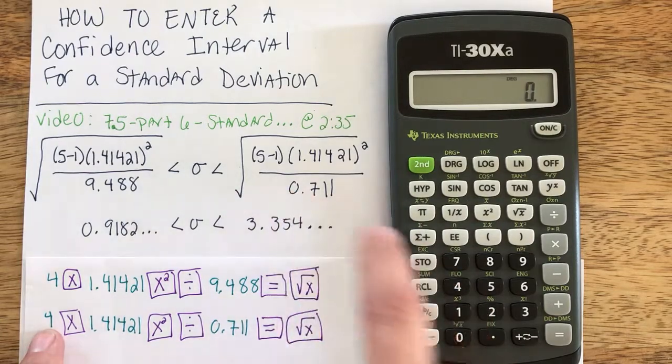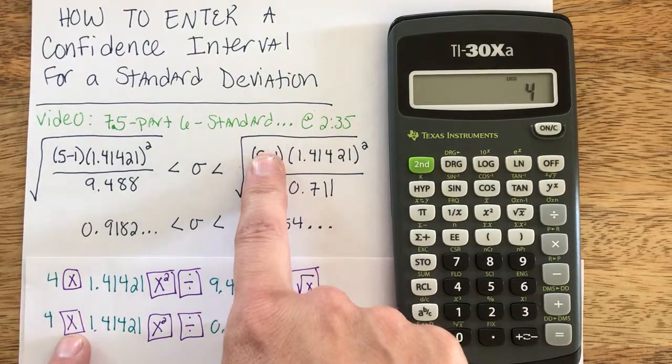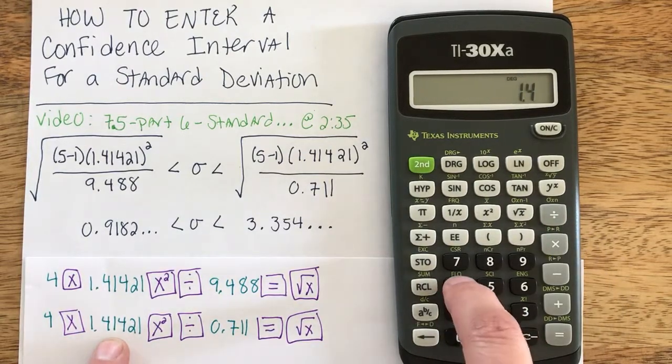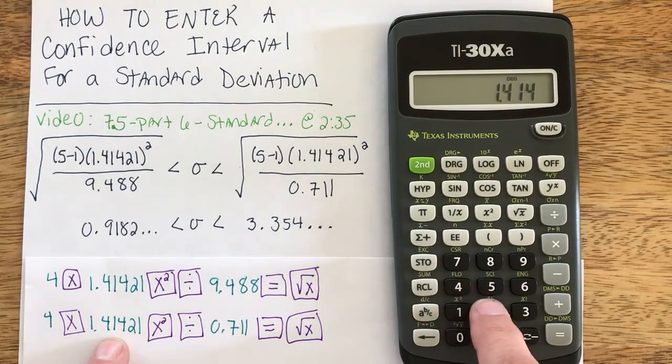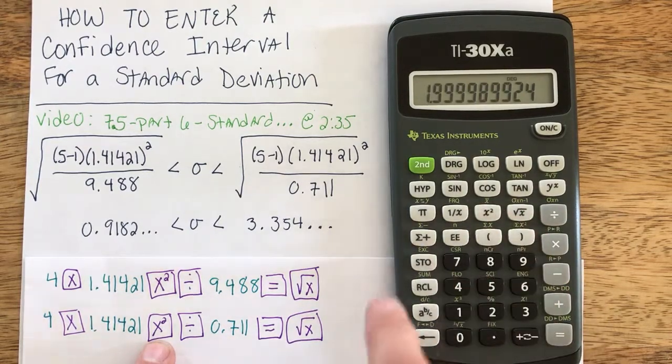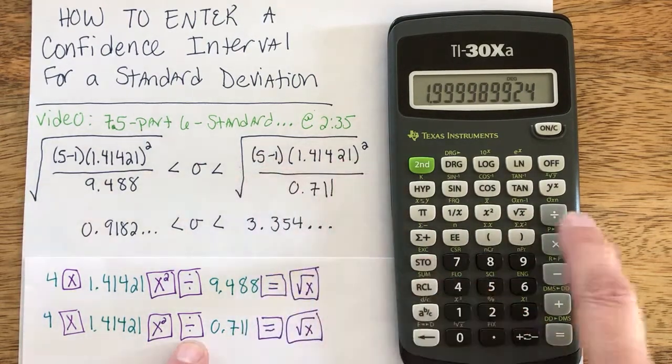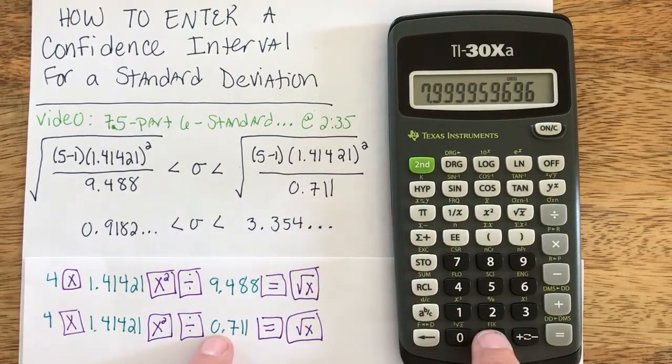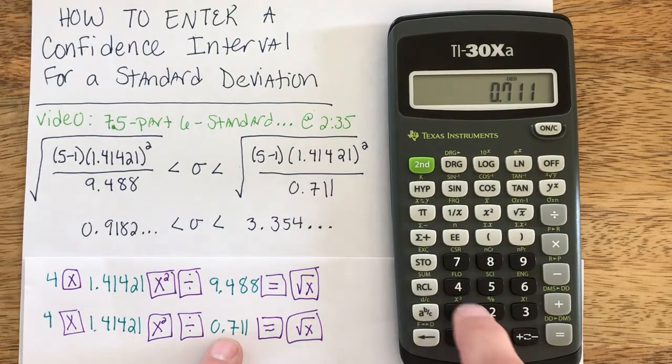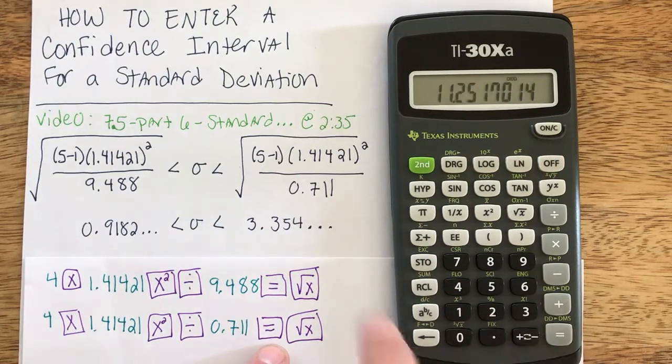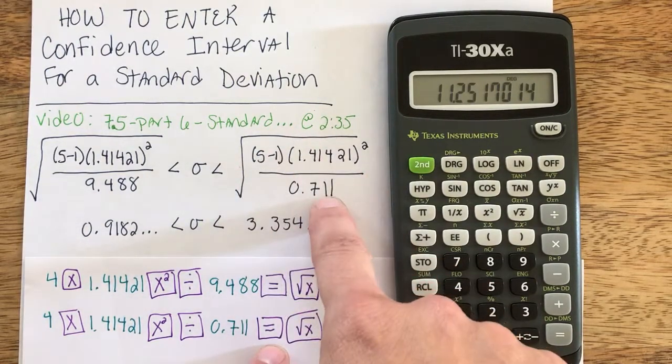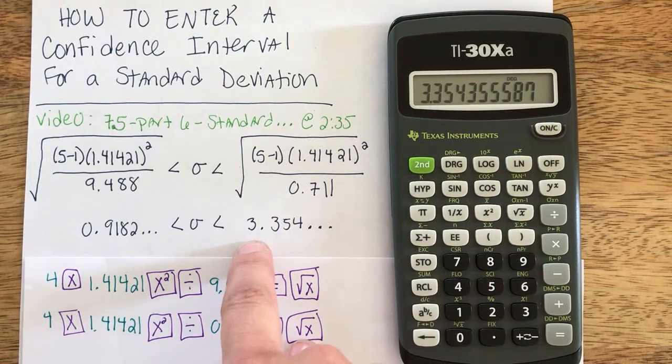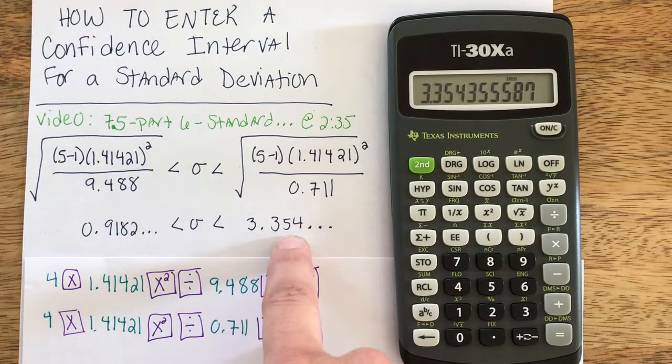So for this upper end, 4 because I've done the math in my head, times the sample standard deviation quantity squared—that's my numerator—divided by my new denominator, and you don't need the leading zero, just 0.711. But I do need to hit equals so that the division takes place and the entire interior is now going to have its square root taken to give me an upper bound of 3.35, etc.